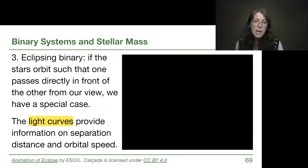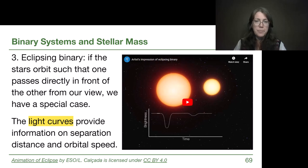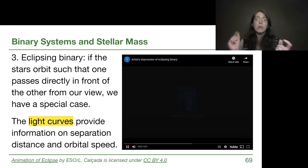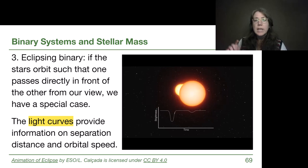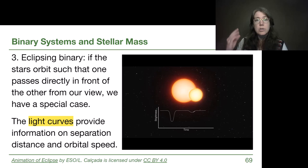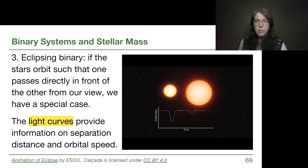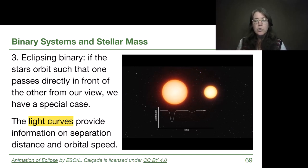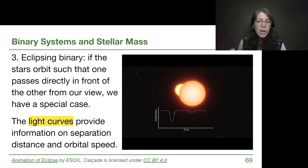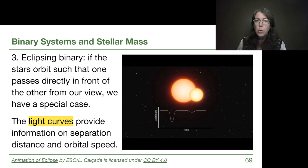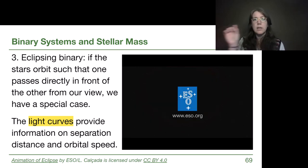And then the last type of system is an eclipsing binary system. So two stars that orbit each other so that one goes directly in front of the other, and when that happens, there's going to be two different types of dips in the total brightness measured over each instant in time. One of the stars passes in front of the second star, and then the second star passes in front of the first star. So we can tell apart the two stars based on the shape of that dip.